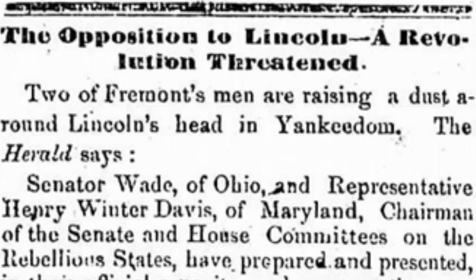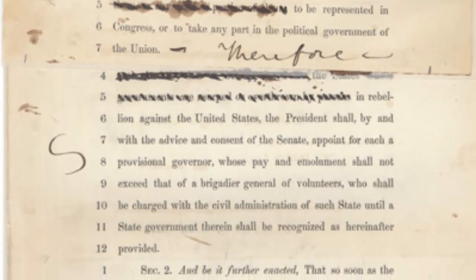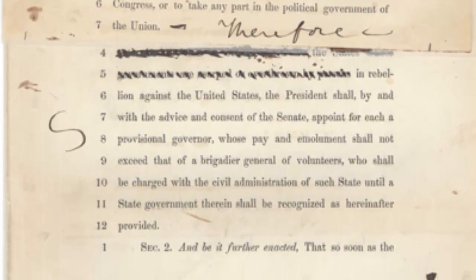On July 2nd, 1864, to respond to Lincoln's 10% plan, Congress passed the Wade-Davis Bill. This gave the power for Reconstruction to Congress and not the president. It said that states would have to adopt a new constitution that abolished slavery and also prevented Confederate officers and government officials from voting. Additionally, the Wade-Davis Bill called for a majority of the male population of each state to take a loyalty oath — a sharp contrast to President Lincoln's 10% plan. Congress passed the bill to reduce some of President Lincoln's power over Reconstruction.